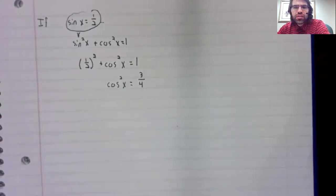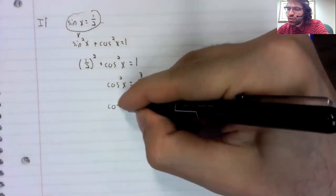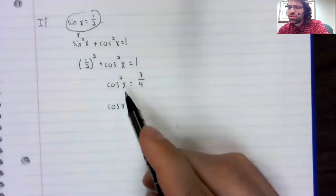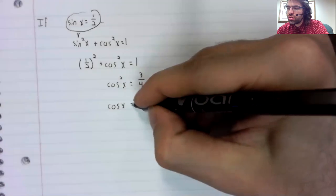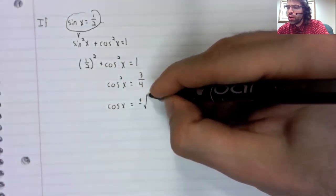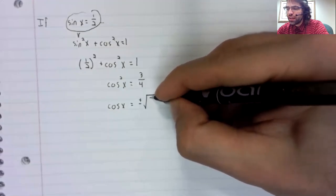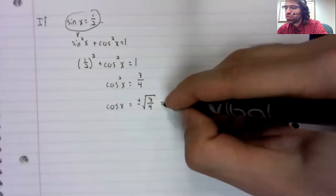Now the reason I say you can't necessarily find the other trig function is that this equality has two solutions. The cosine could be the positive or negative square root of three fourths,